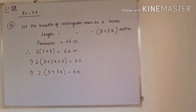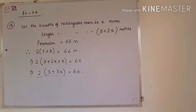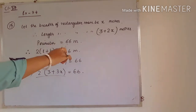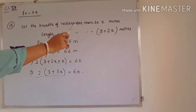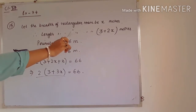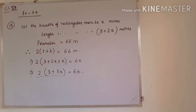You have to solve the remaining steps. You know how to solve it, so try to solve this question. You can easily find the value of x, which will be our breadth. After putting x in the length formula 3 plus 2x, you can find the length of the rectangular room.